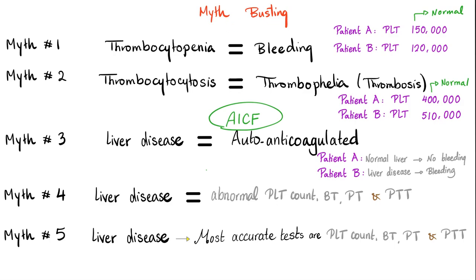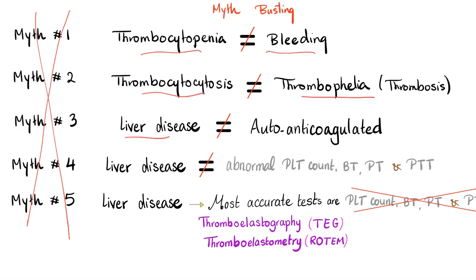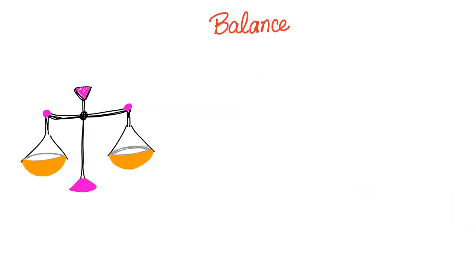It's time for healthcare workers to get our heads out of our collective sphincters and learn the facts. Thrombocytopenia is not the same as bleeding. Thrombocytosis is not the same as thrombophilia. Liver disease is not the same as being anticoagulated. The most accurate tests for liver disease are thromboelastography and thromboelastometry. Everything is balanced: too much hemostasis and you thrombose; too little hemostasis and you bleed. Balance is key.